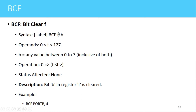Here F is the file register; it can take any value between 0 to 127, which are RAM address locations, or F can be an SFR. B indicates the bit position in that particular file register and can take any value between 0 to 7, where 0 is the LSB and 7 is the MSB. The operation performed by this instruction is that the specified bit in the file register will be cleared. None of the flags are affected.